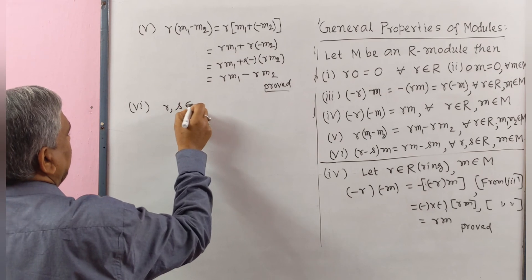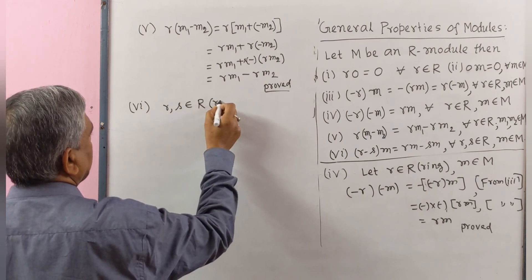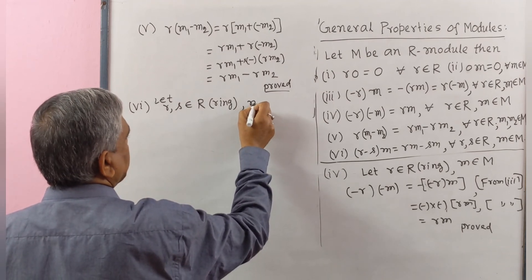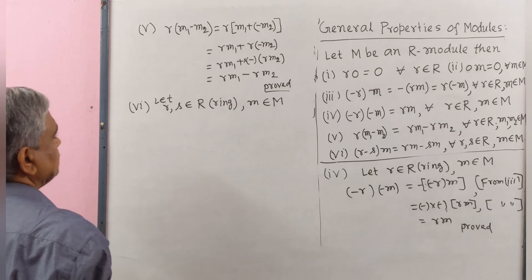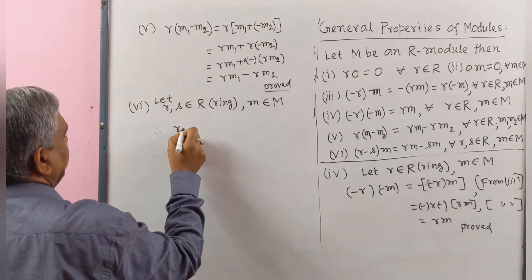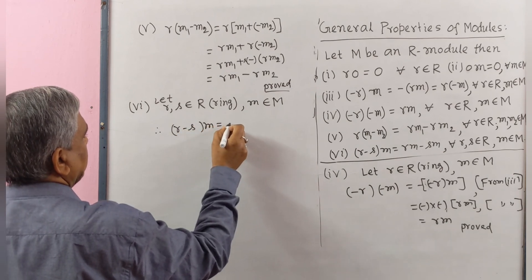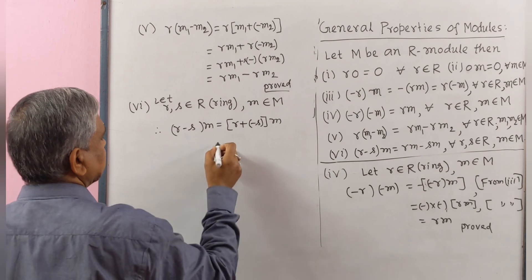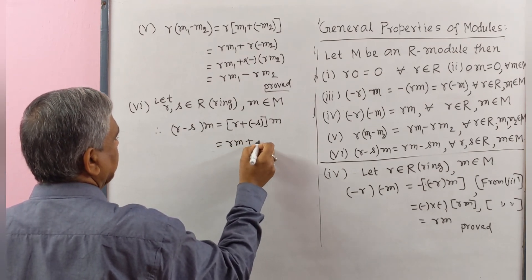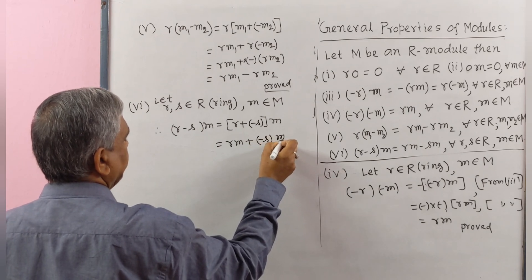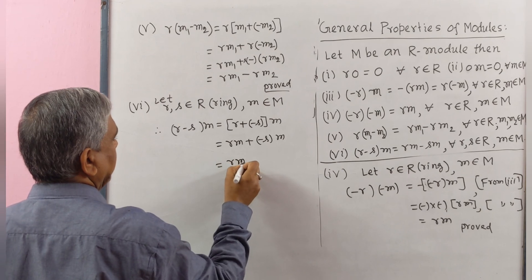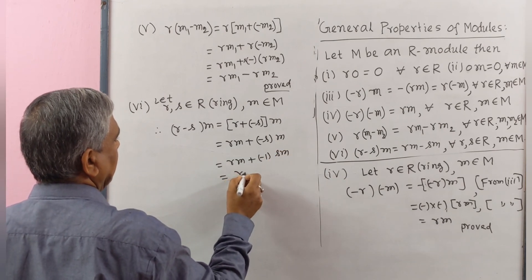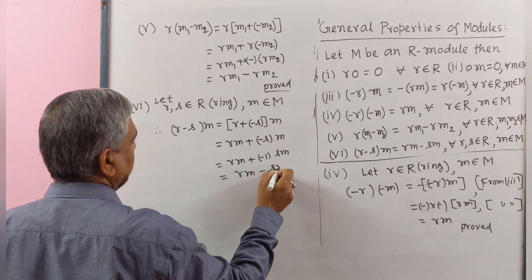Property number six. Let r, s belong to ring R and m belong to module M. Then (r - s)·m = (r + (-s))·m = r·m + (-s)·m = r·m + (-(s·m)) = r·m - s·m. Proved.